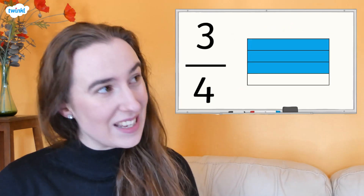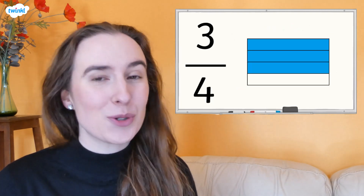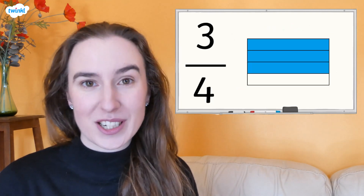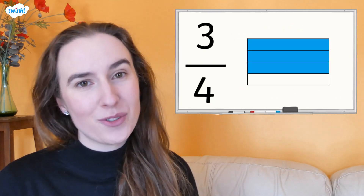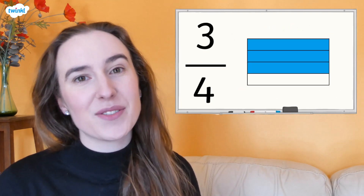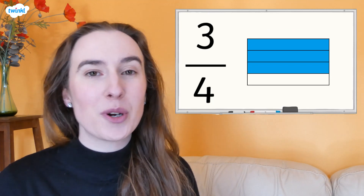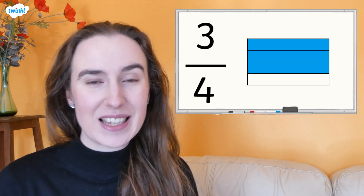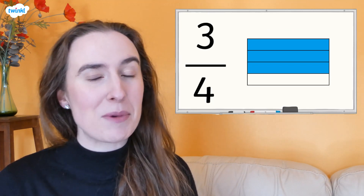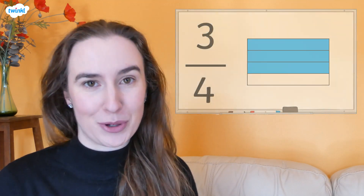So, in this rectangle showing three quarters, the whole rectangle is divided into four equal parts and three of them are shaded blue.